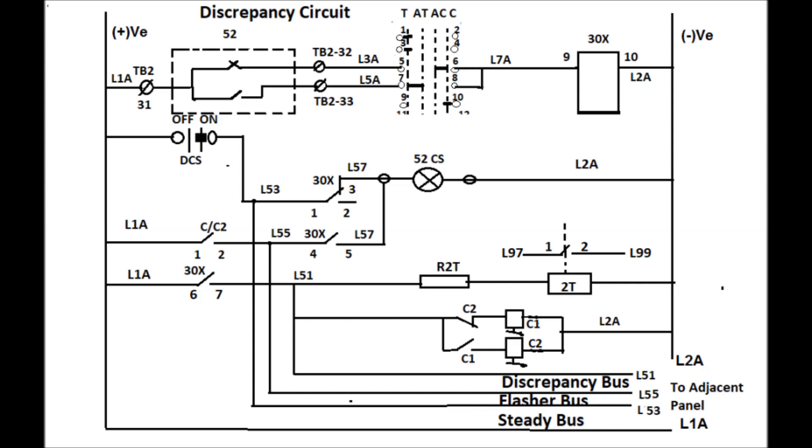Discrepancy bus will get through positive DC and also flasher relay will energize, and that will lead to energize the flasher bus. That is continuous on-off DC positive will go through the flasher bus wire, which will lead to flashing or blinking of the lamp in the said control switch of the panel.